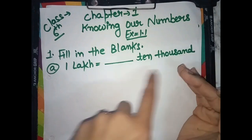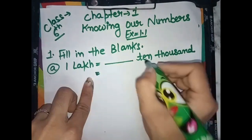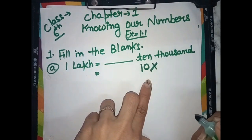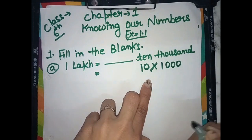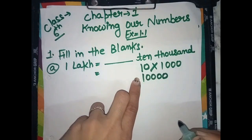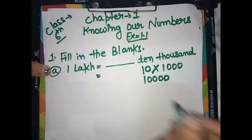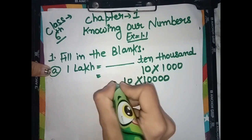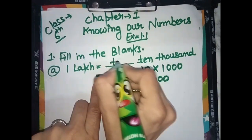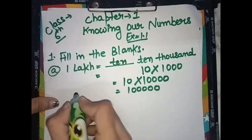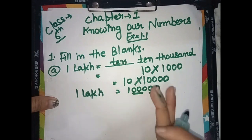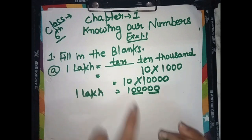1,00,000 has five zeros. It means we will multiply 10 with 10,000. One with five zeros — one lakh. So, one lakh is equal to 10 ten-thousands, which is 1 with five zeros.